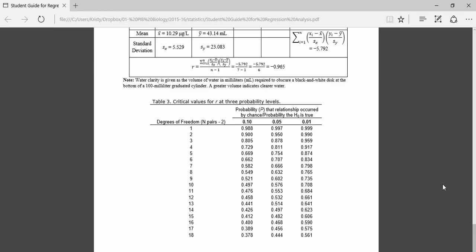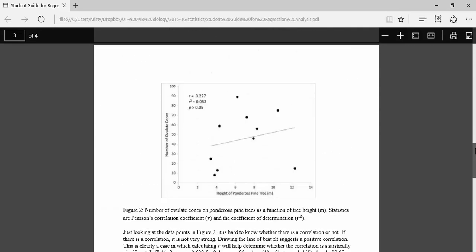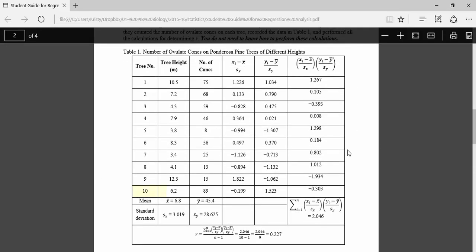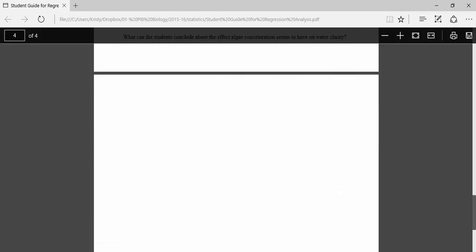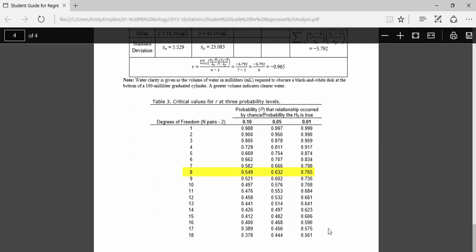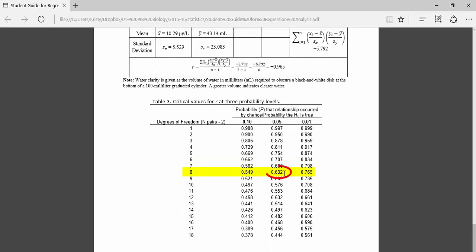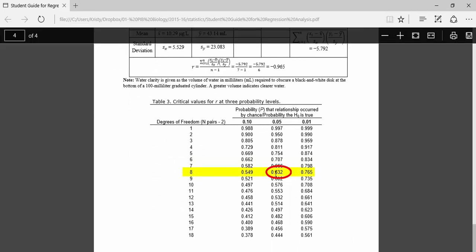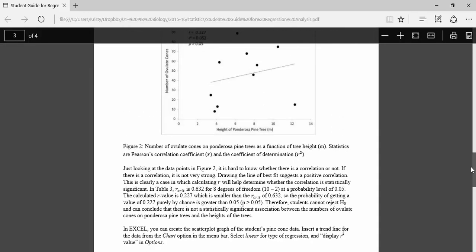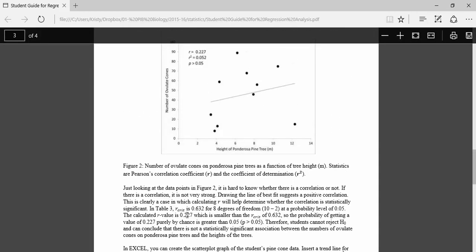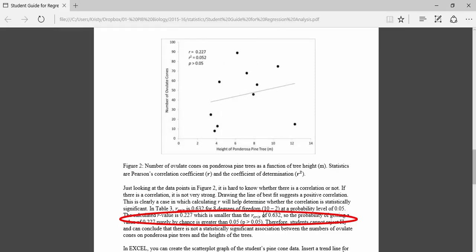We need to know our degrees of freedom. This is determined by looking at the number of pairs. In this case, there were 10 pairs, and then subtracting by 2. So if we go back to our table of critical values, 8 is my degrees of freedom. And for alpha at 0.05, 0.632 would be my critical R value. Coming back up and looking at our graph here, the R critical is 0.632 for 8 degrees of freedom at a probability level of 0.05.